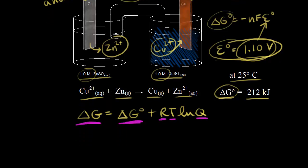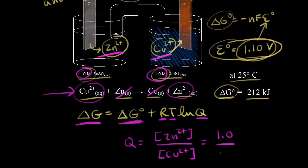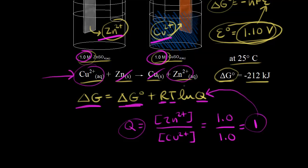Let's think about what the reaction quotient is for this reaction. For our spontaneous redox reaction, Q has the same form as the equilibrium constant — concentration of products over concentration of reactants, leaving out pure solids. That would be the concentration of zinc two-plus over the concentration of copper two-plus. At this instant, we plug in: zinc two-plus is one molar, copper two-plus is also one molar, so Q equals one. The natural log of one equals zero, so this term goes to zero.